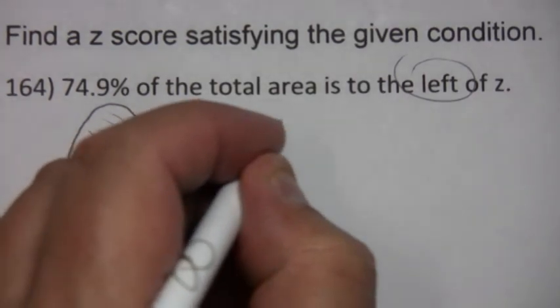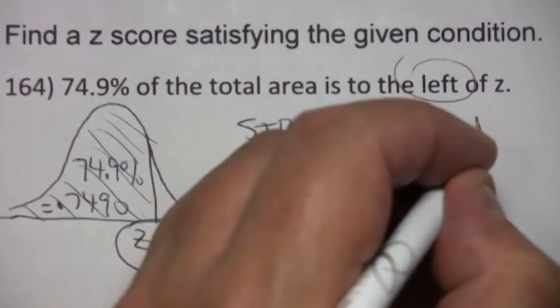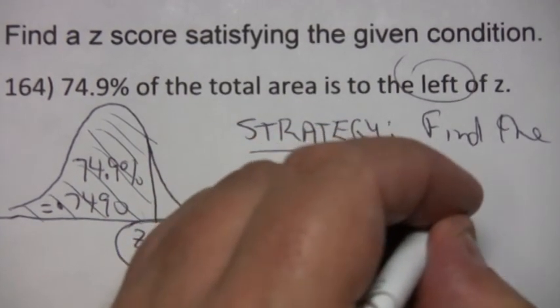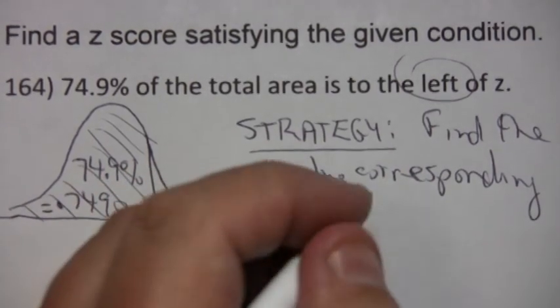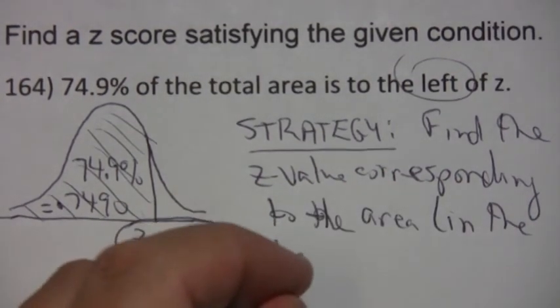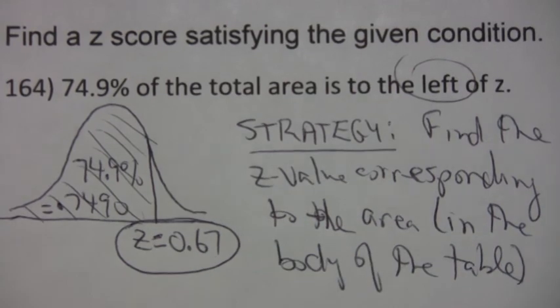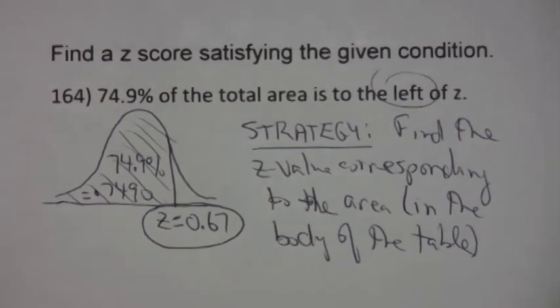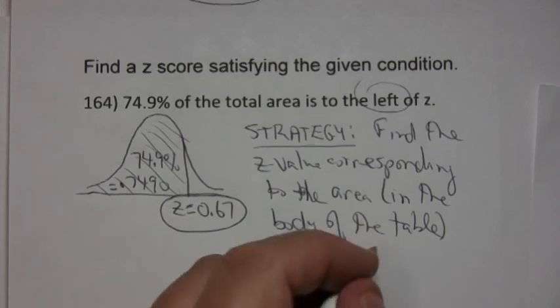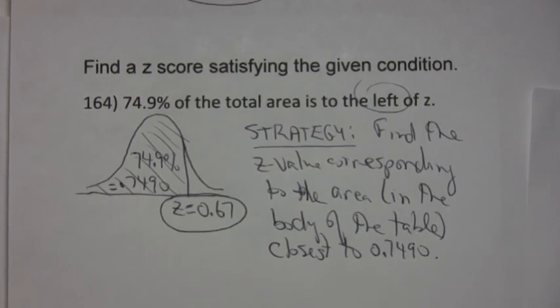And again, just to emphasize what I did. My strategy as before was to find the z value corresponding to the area which is in the body of the table. And I want to find that z value that's closest to this 0.7490. So that's the strategy I used to get that value 0.67.